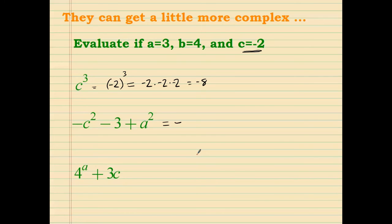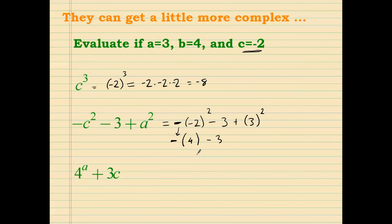On the second example, we have a negative out front, and instead of c I substitute negative 2, then the exponent, minus 3 plus a squared with a substituted as 3. Evaluating by order of operations — exponents first — the negative stays out front, and negative 2 to the second power is positive 4, minus 3 plus 3 squared equals 9. So negative 4 minus 3 equals negative 7, plus 9 equals positive 2.